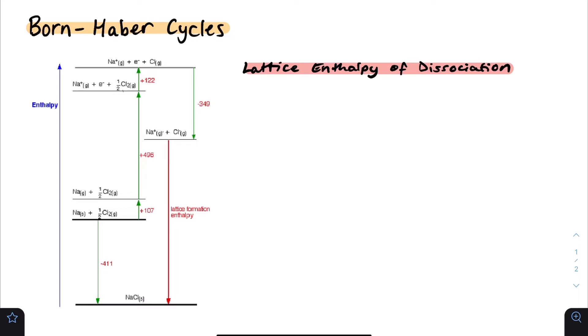The first thing to understand Born-Haber cycles better is to understand what the lattice enthalpy of dissociation is. This is defined as the enthalpy change needed to convert one mole of a crystal or an ionic substance into its scattered gaseous ions.